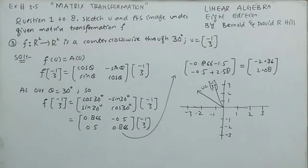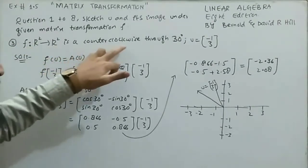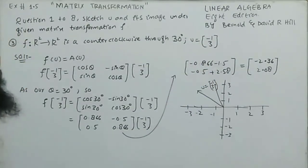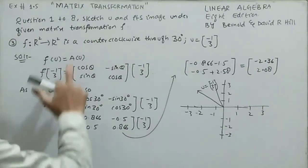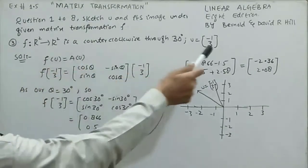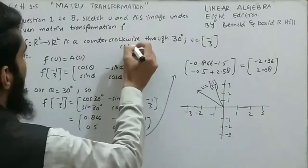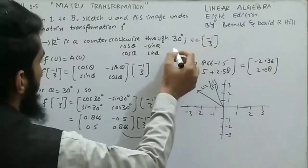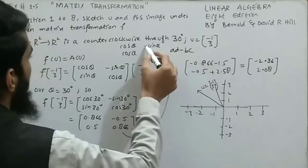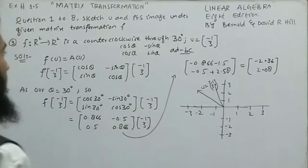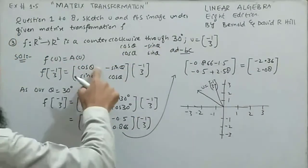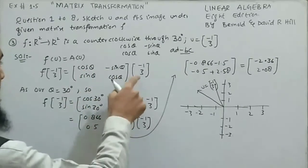We skip question 2 as it is similar to question 1, and move to question 3. It tells that a function from R² to R² is a counterclockwise rotation through 30 degrees, and u = (-1,3). We need to find the image and sketch u. Using f(u) = A·u, where A is the rotation matrix: [[cos θ, -sin θ],[sin θ, cos θ]], with θ = 30°.